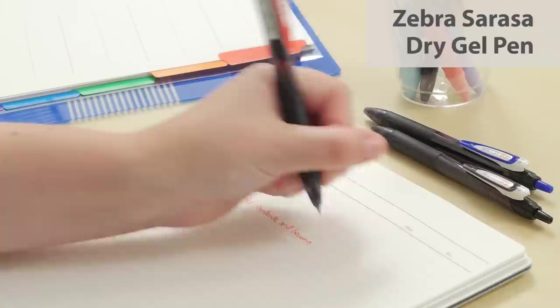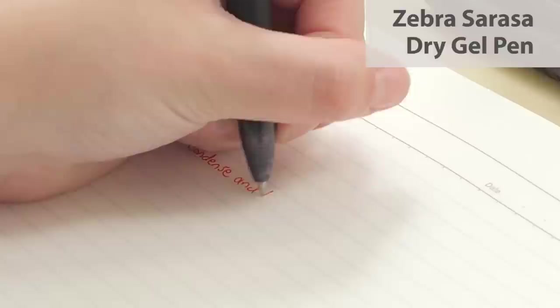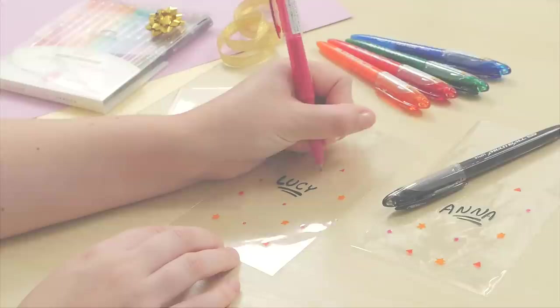The Zebra Sarasa dry gel pen produces super dark lines and writes incredibly smoothly. The best part about this pen is that it dries instantaneously. In fact, we found that the ink dried on most of our tests before we could even touch them.